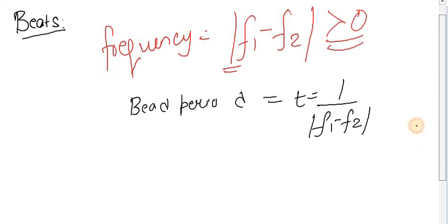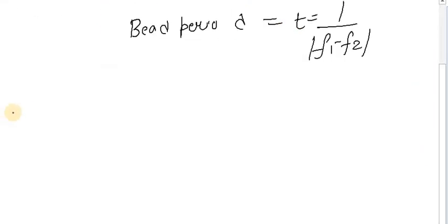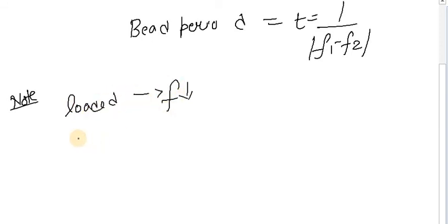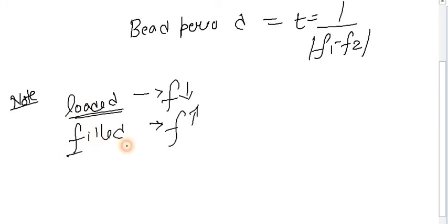Important note: when a tuning fork is loaded with wax, its frequency decreases. When it is filed, its frequency increases. There is a key difference between 'loaded' and 'filed': loaded means frequency decreases, filed means frequency increases.